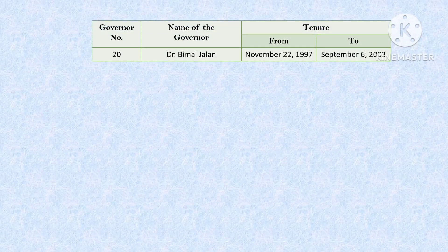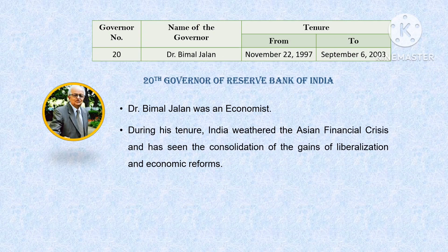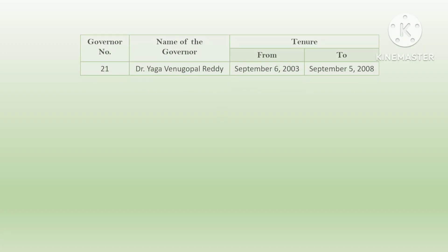The twentieth governor was Dr. Bimal Jalan. His tenure was from November 22, 1997 till September 6, 2003. He was an economist. During his tenure, India weathered the Asian financial crisis and saw the consolidation of gains of liberalization and economic reforms.